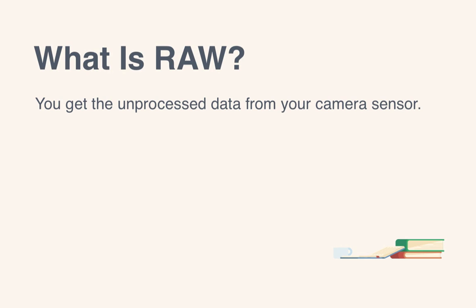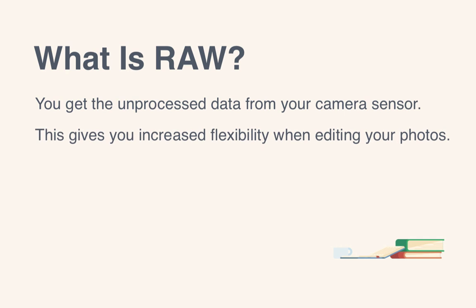When you set your camera settings and take a photo, the image is created on your camera sensor. The information is recorded as raw and you can fine tune settings such as the white balance, exposure, and contrast later instead of relying on your camera to set them for you. This gives you increased flexibility when editing your images.